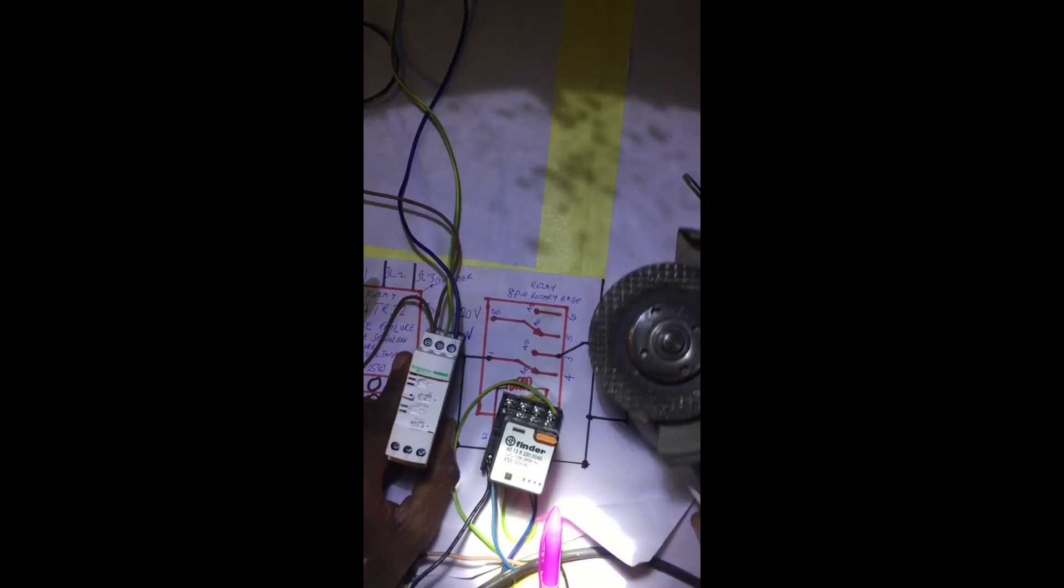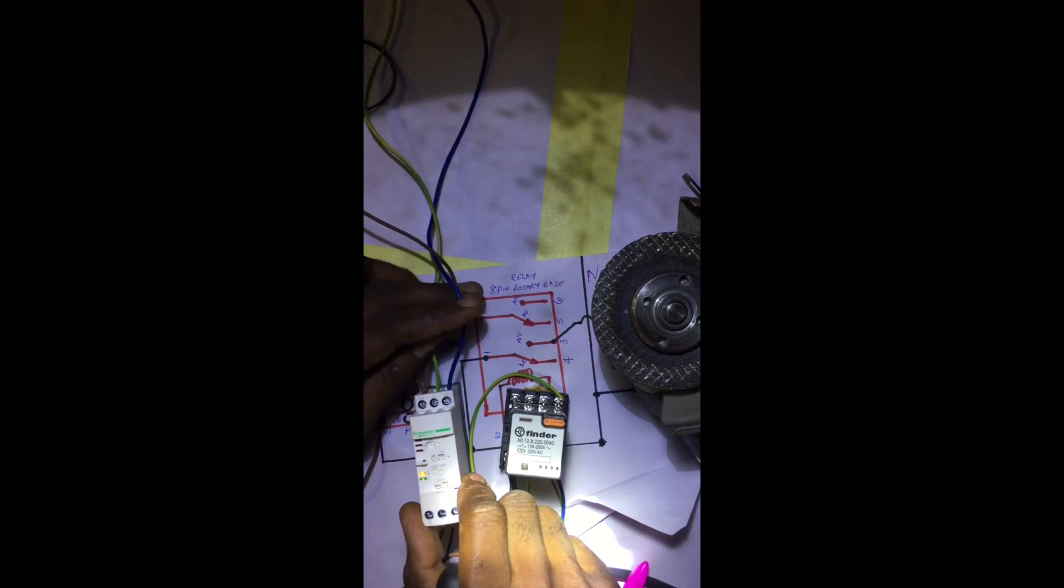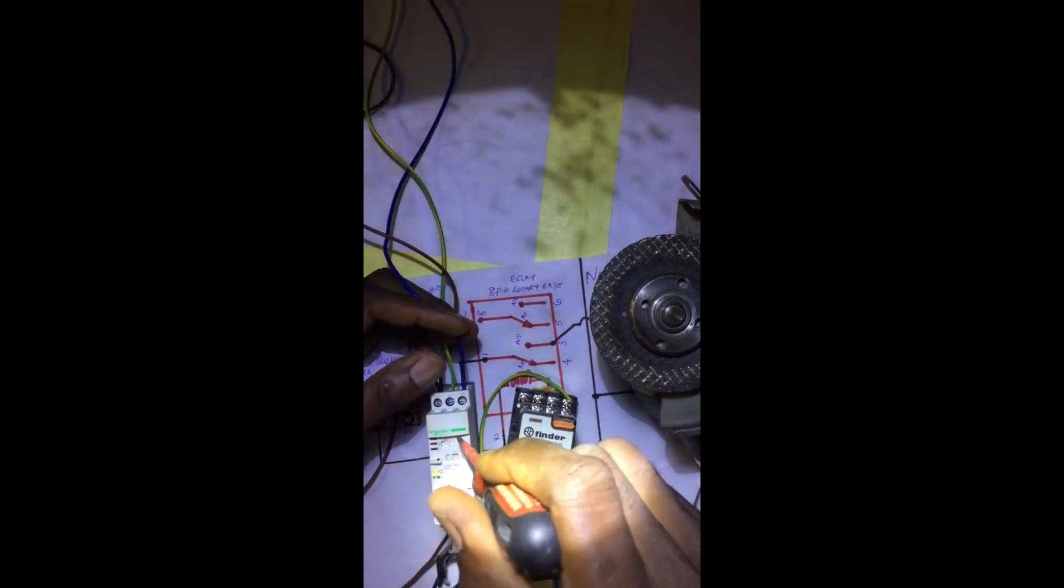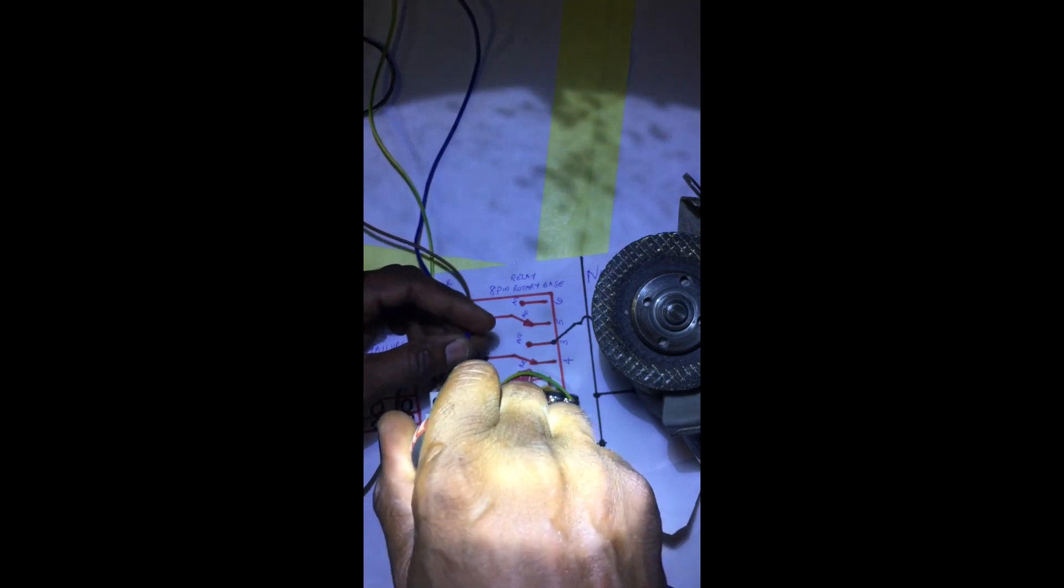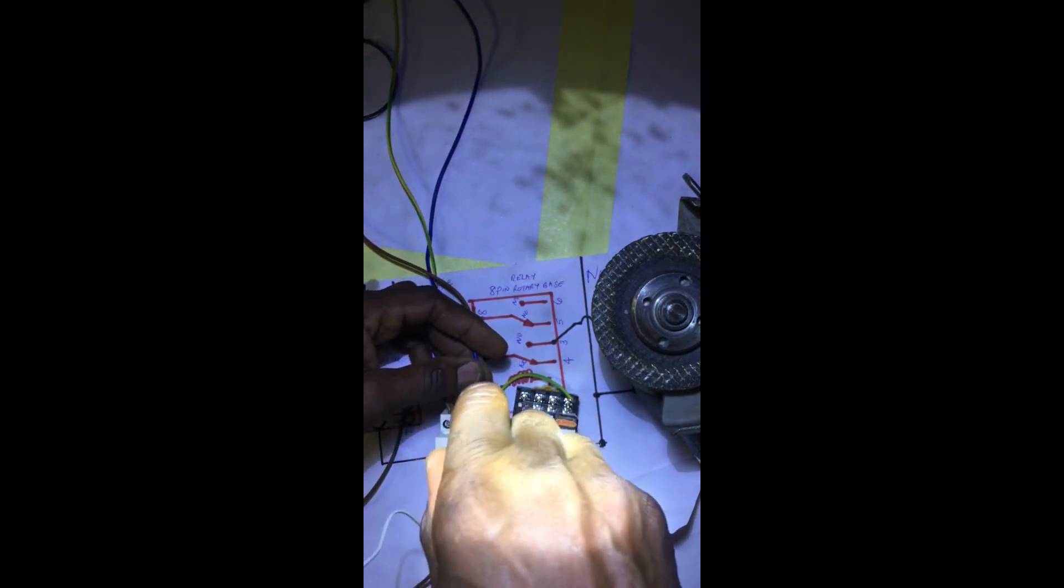This is the motor. If for any reason any of these phases fail, automatically there will be no conduction. Let's suppose now, for instance - this is dangerous but I'll do it - in the course of your supply, one of the phases goes off. Let's say L3 goes off.